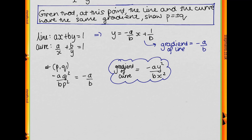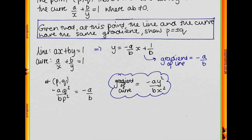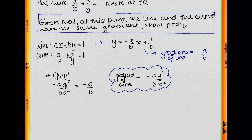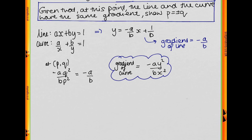Since neither a nor b is 0, we can divide both sides by -a/b and multiply through by p², giving us q² = p². That tells us that q = ±p, as required.